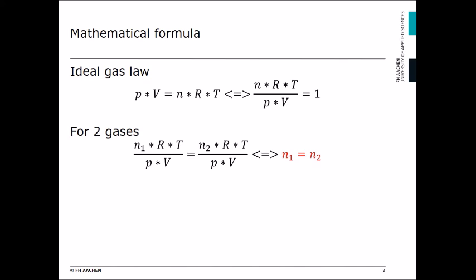For two gases, you can equate this, so n1 must equal n2. For our calculation, n is the mass divided by the molar mass. So for our case, mass 1 divided by molar mass 1 equals mass 2 divided by molar mass 2.